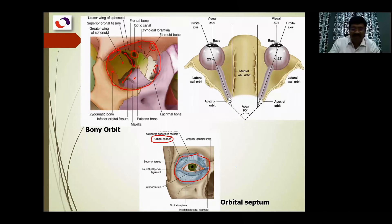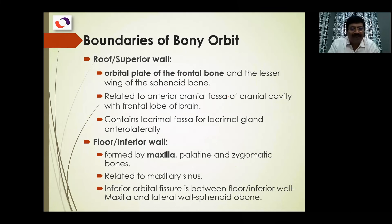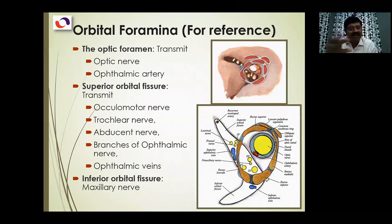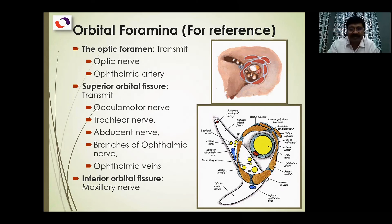That covers the bony orbit. The boundaries and important facts have already been explained, so you can revise with the picture. The openings are listed for reference, because if they are covered in the lab you should remember the contents of the optic canal, superior orbital fissure, or inferior orbital fissure. Through the optic canal pass the optic nerve and ophthalmic artery. Through the superior orbital fissure pass the third, fourth, and sixth cranial nerves and the ophthalmic division of the trigeminal nerve.